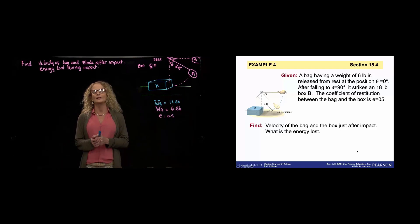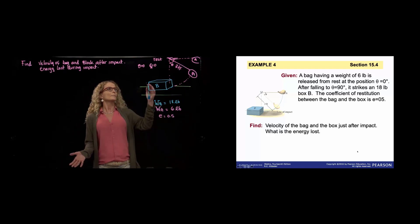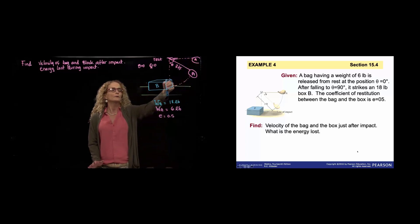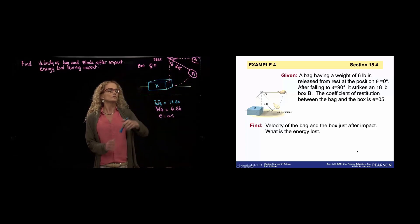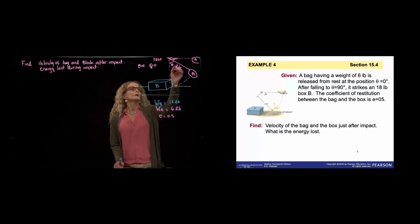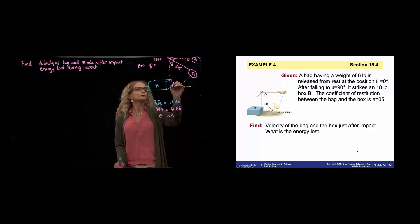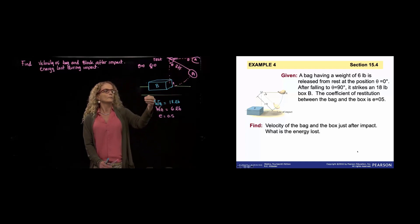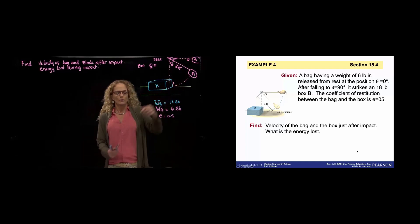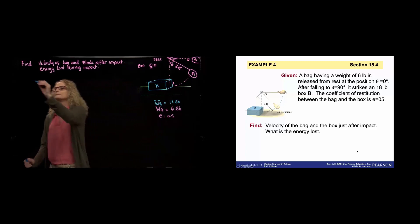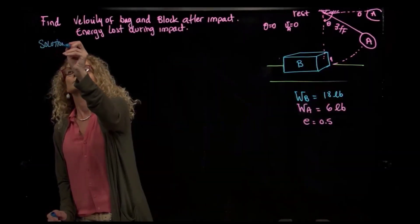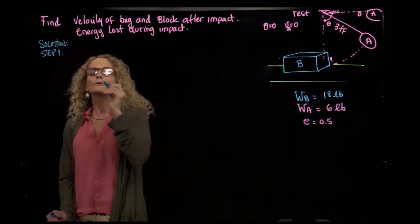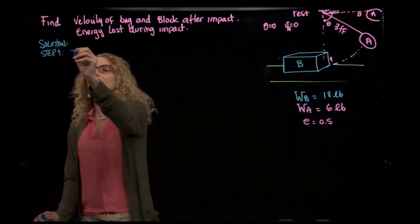First step: we are given that this is released from rest, and we don't know anything about the velocity when it reaches the block. So the first thing we have to do is name this position zero and this position one, meaning it goes from zero to one and hits the block. We want to find the velocity at position one. For that, I will use the principle of work and energy.